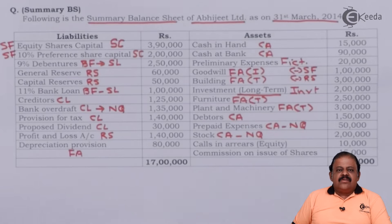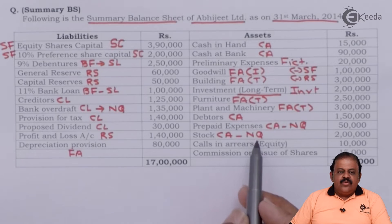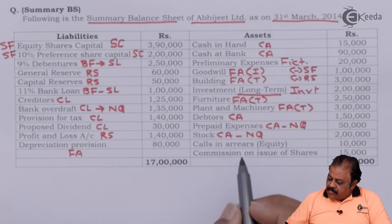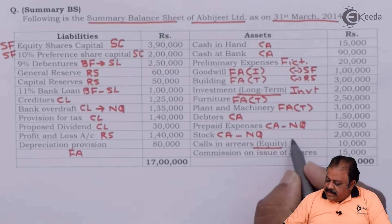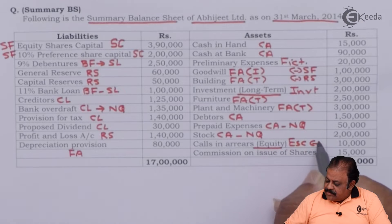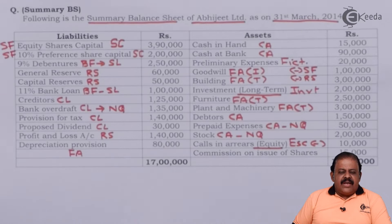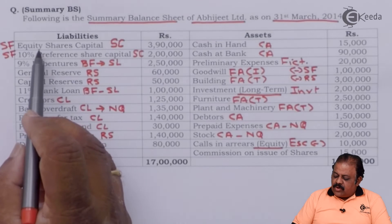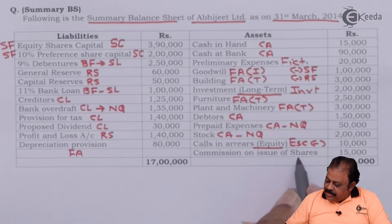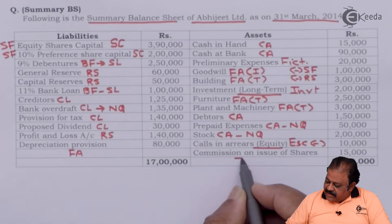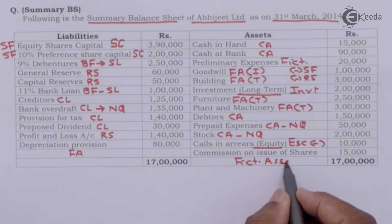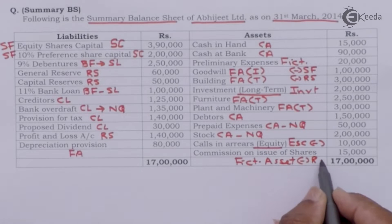Stock is categorized as non-quick because you cannot sell stock immediately as and when you want — it takes time to sell stock at a proper price. Calls in arrears on equity will be deducted from equity share capital. It means calls are pending on shareholders who have defaulted payment. It is an amount receivable from shareholders, to be deducted from equity share capital. Commission on issue of shares is also a fictitious asset with no realizable value, and will be deducted from reserves and surplus.